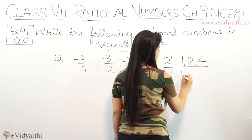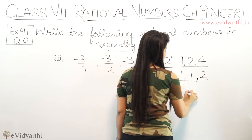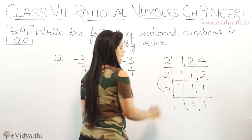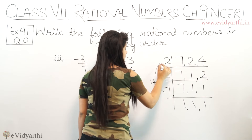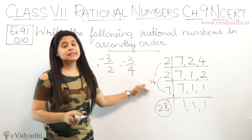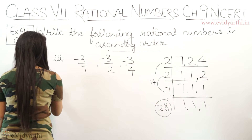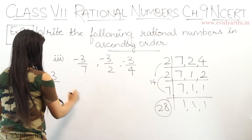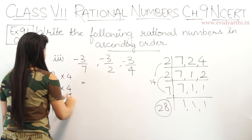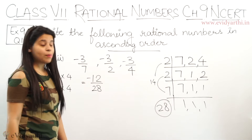LCM लेते हैं, 2 से start करते हैं: 7 as it is, this will be 1 and this will be 2. फिर से 2 से करेंगे: 7 as it is, 1, 1. And then 7 से: यह हो गया 1, 1, 1. So 7 × 2 = 14, 14 × 2 = 28. LCM is 28. Means कि यहां पे जो denominators हैं, इनको 28 बनाना है. सबसे पहले minus 3 upon 7 — 7 को किससे multiply करेंगे कि 28 आए? 7 × 4. So यह भी 4 से होगा: 7 × 4 = 28, and 3 × 4 = 12. So यह होगा minus 12 upon 28.